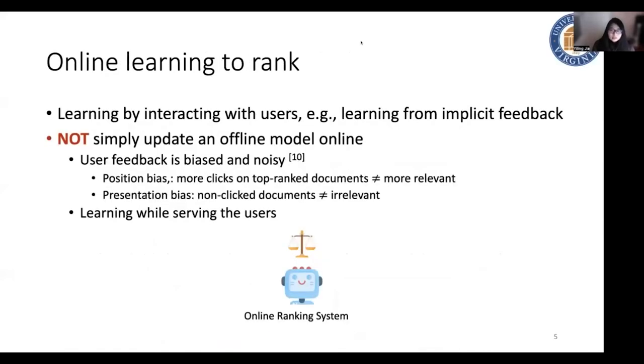Online learning to rank is not simply updating an offline model online. First, users' feedback is known to be biased and noisy. For example, for this position bias, more clicks on top-ranked documents does not mean more relevant. And for presentation bias, the user can only interact with the documents shown to them. Therefore, the non-click document is not necessarily irrelevant.